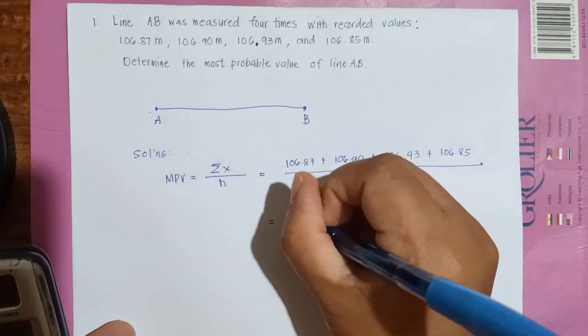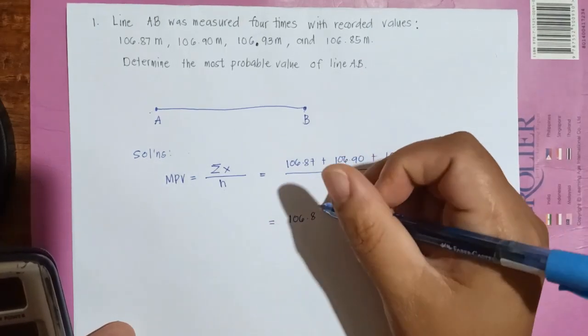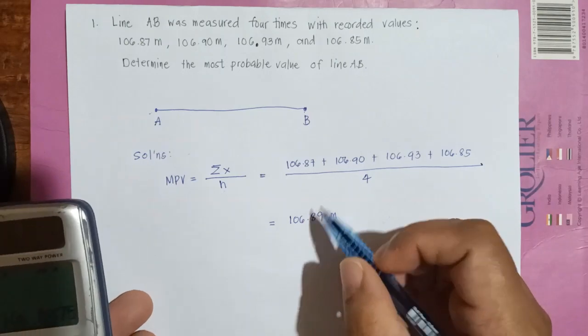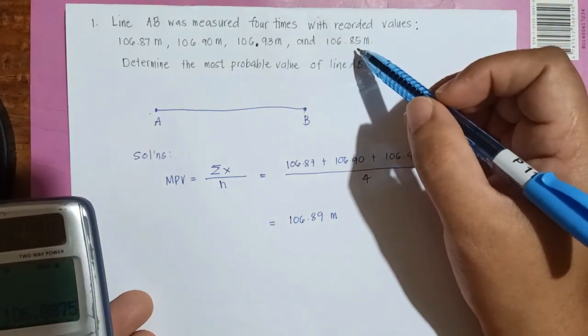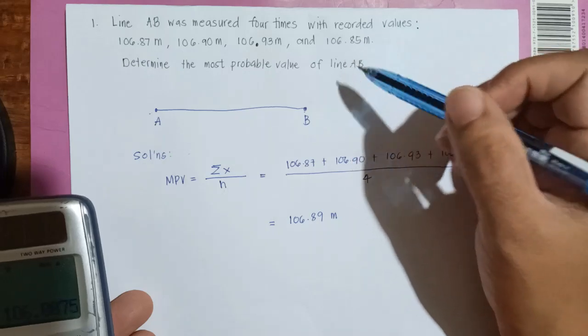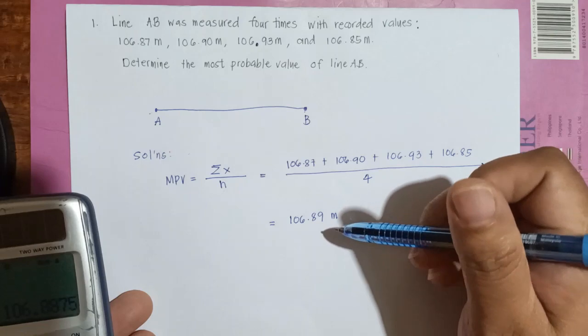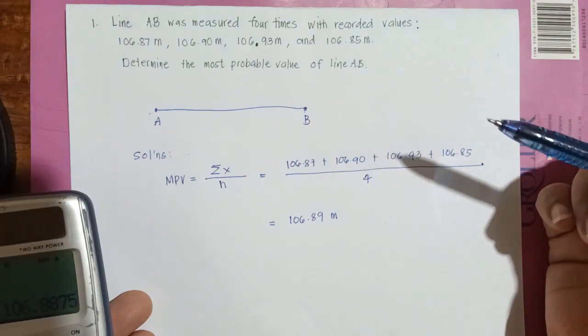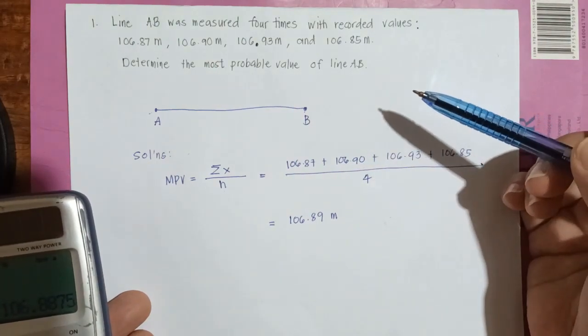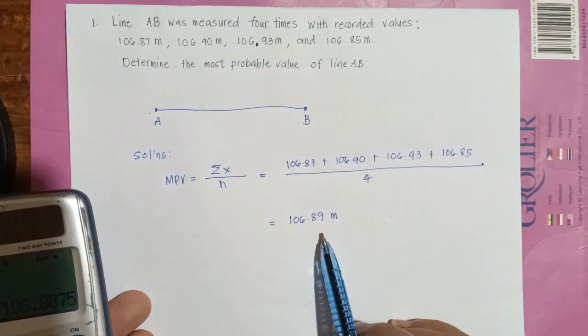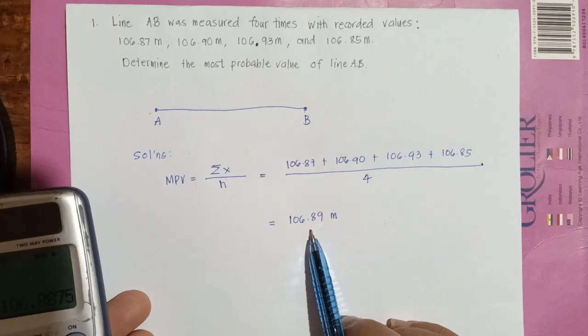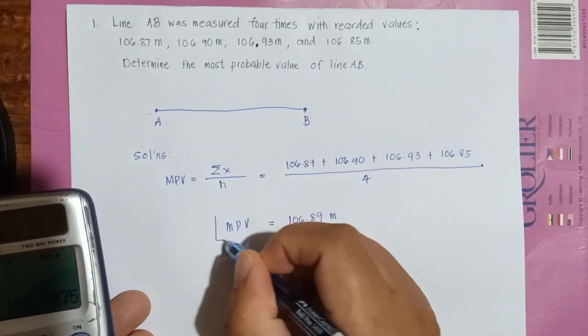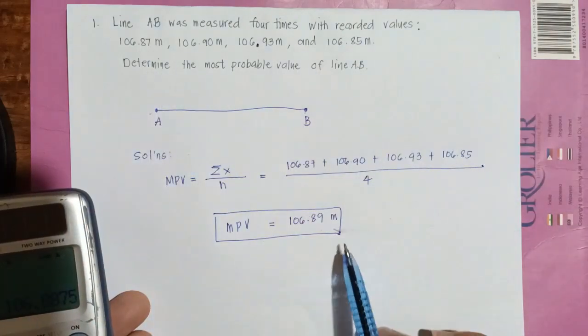You have 106.889 meters. Why up to two decimal places? Because the given are to the nearest thousandth, so you have to also round off your answer up to the two decimal places, unless it is stated. So if the question stated what is the most probable value of line AB to the nearest tenths of a meter, then you have to round this off up to one decimal place.